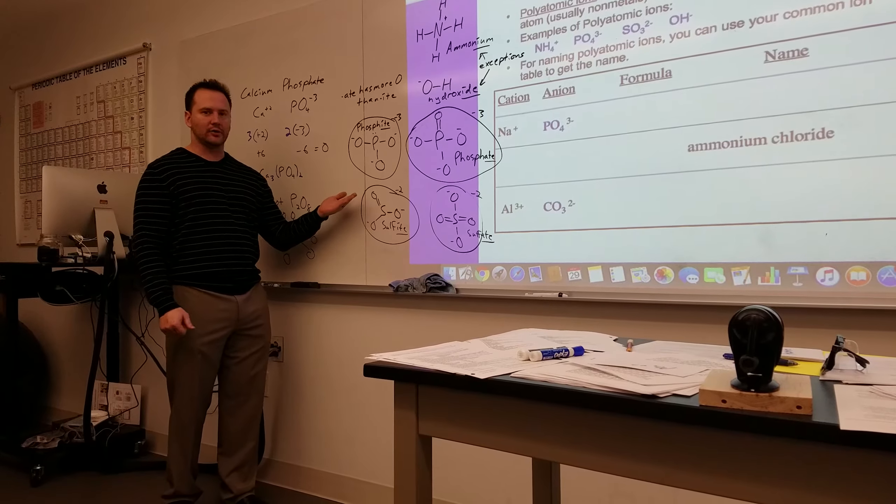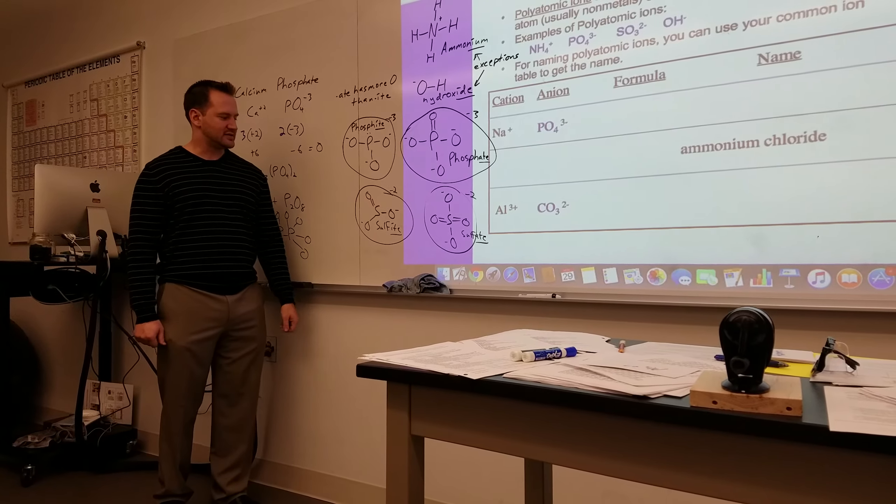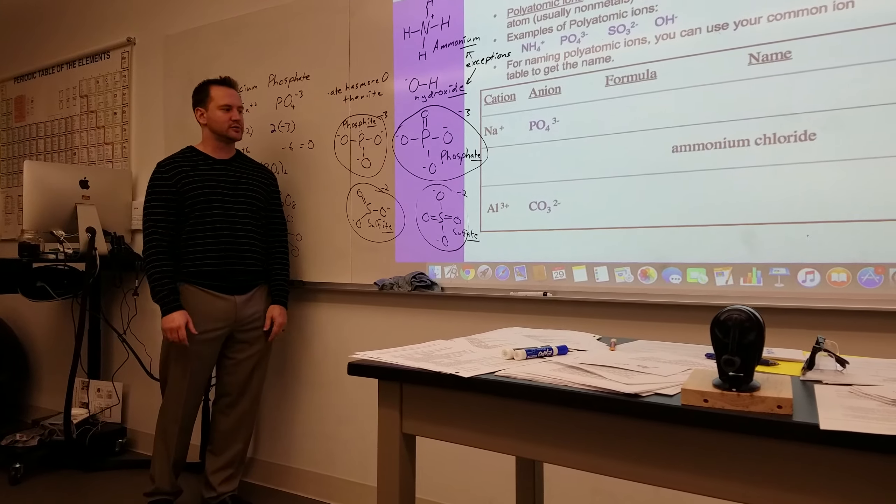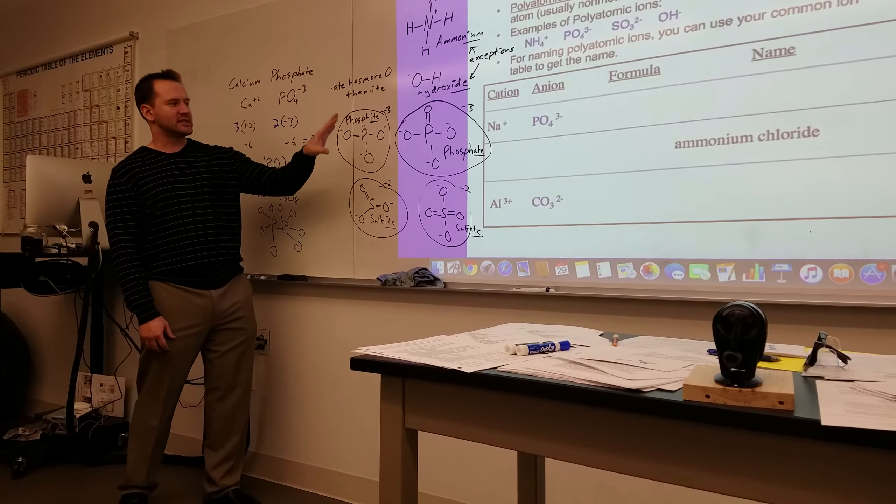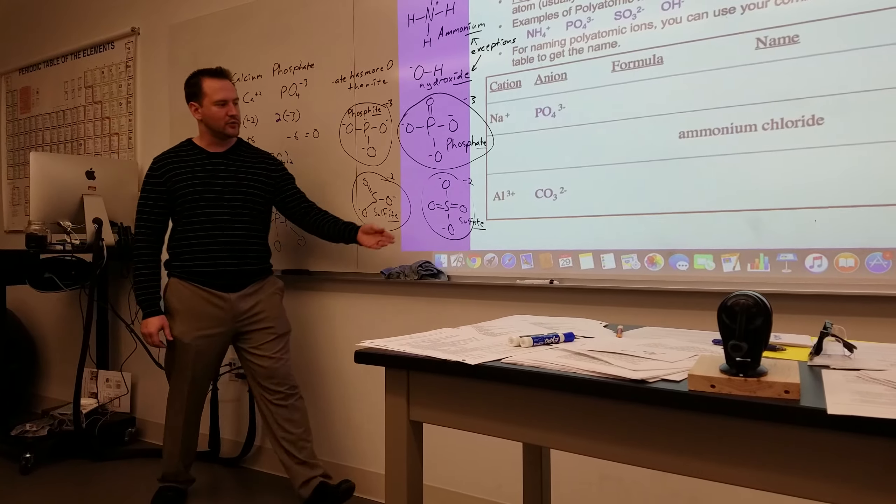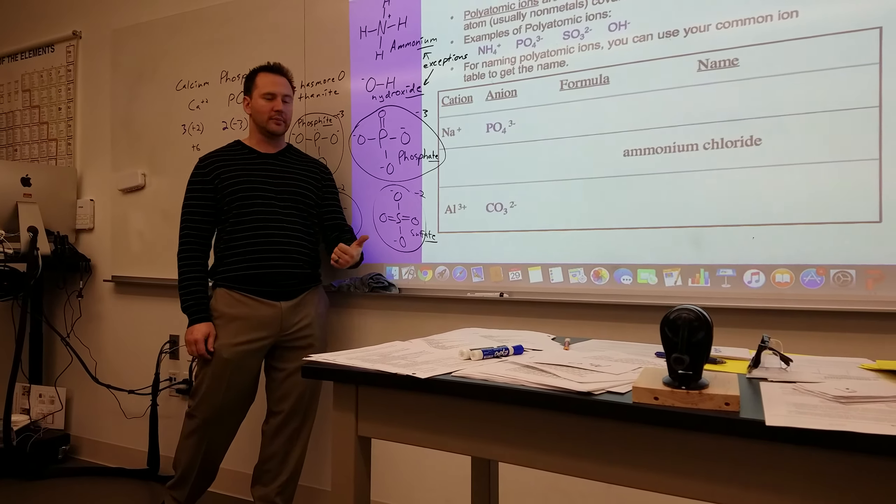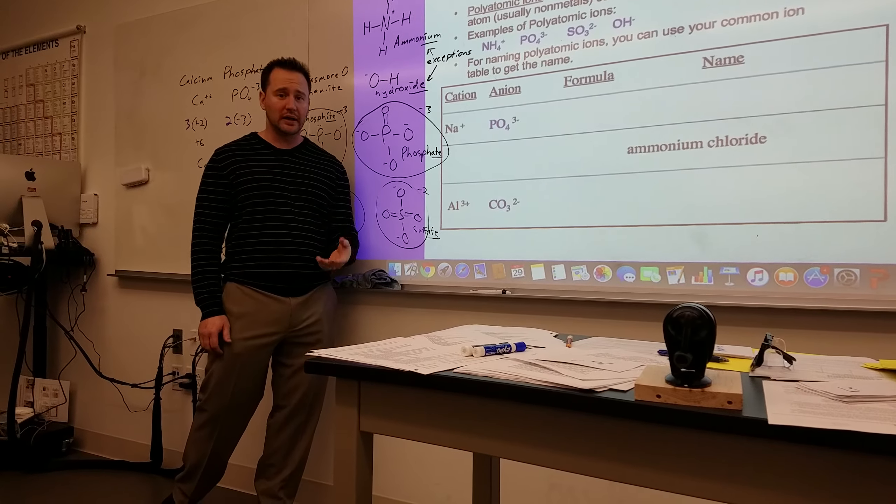Sulfite, again, ate always having one less oxygen, is SO3 with a minus two charge. So these are examples of these polyatomic ions. Carbonate would be another example where you have carbon with three oxygens, two of them being negative.